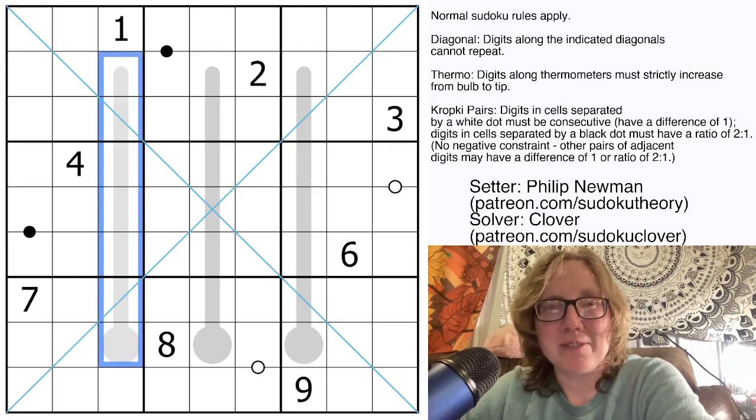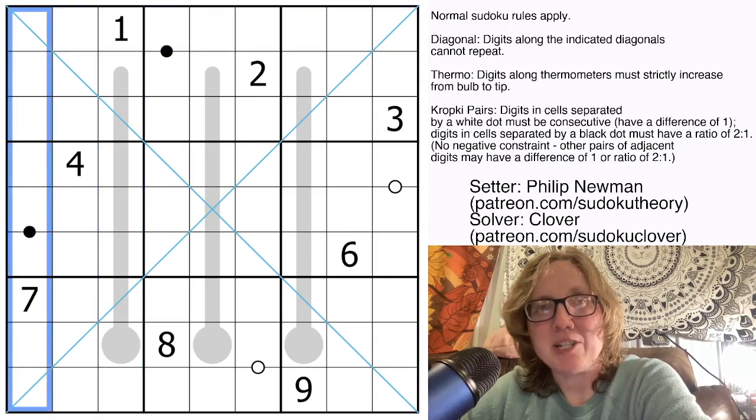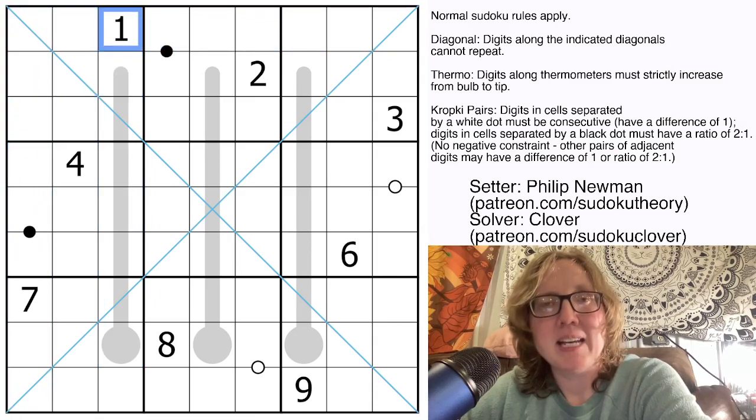So, normal Sudoku rules. We're placing the digits 1 through 9 once each in each row, each column, and each outlined 3x3 region.